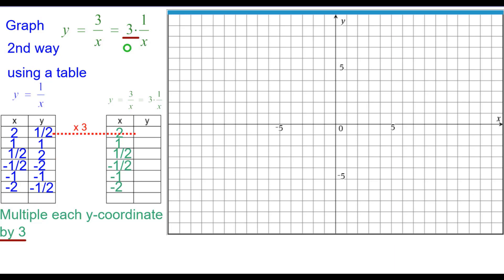So 1 half times 3 is 3 halves. So we'll plot 2 comma 1 and a half. 1 times 3 is 3. 1 comma 3. 2 times 3 is 6. So 1 half comma 6. And then going to the negative side. Negative 2 times 3 is negative 6. So negative 1 half comma negative 6. Negative 1 times 3 is negative 3. Negative 1 negative 3. And then finally negative 2 comma negative 1 and a half.